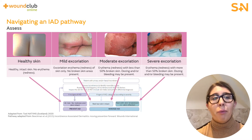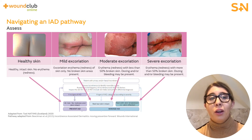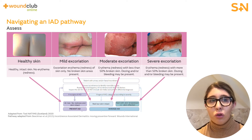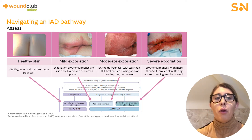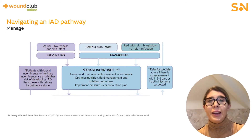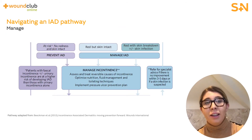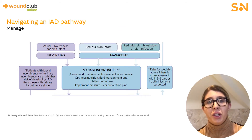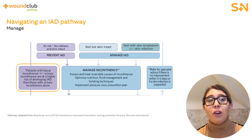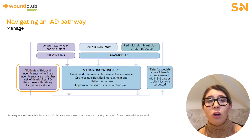Using the pathway from Beckman et al. 2015, we can see that the healthy skin category would need to go down the prevention route of the pathway, and the mild to severe excoriation categories would need to go down the management route. After the IAD type has been classified, the clinician is able to start managing the incontinence. For patients who have healthy skin but are incontinent, they are at risk of developing an IAD and should be checked at least once daily, depending on the frequency of the incontinence episode.